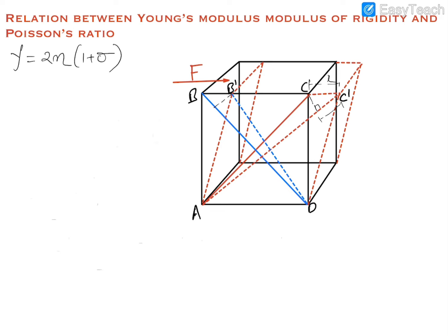When this top surface is displaced slightly by a distance x, and the bottom surface is at rest and stationary, there will be an angle formed — this is phi. You must remember that tan phi is also called shear strain, and tan phi is equal to this displacement x divided by the length L. So tan phi equals x upon L.